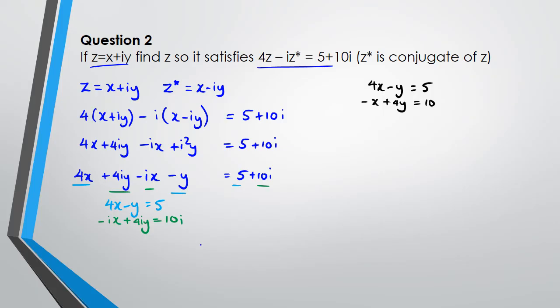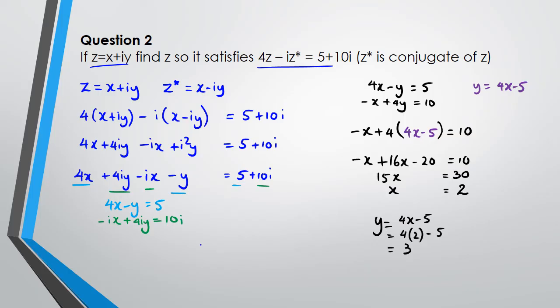So rearranging the top line, I'm going to get y is equal to 4x minus 5, which means in the second I can substitute y in the second equation as 4x minus 5, and that is equal to 10. Expanding this, I'm going to get negative x plus 16x minus 20 equals 10, so we've got 15x equals 30, and x is equal to 2. And if x equals 2, we got y equals 4x minus 5, and we've got 4 times 2 minus 5, which equals 3. So z is equal to 2 plus 3i.